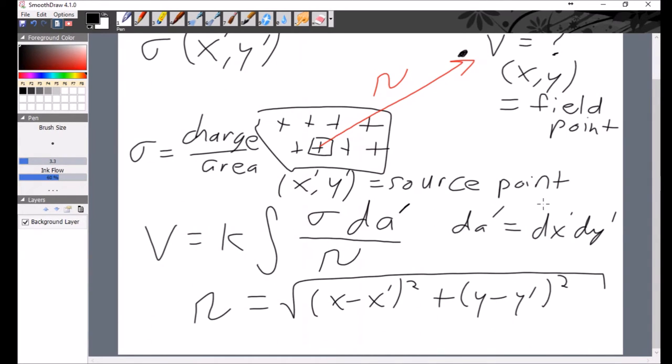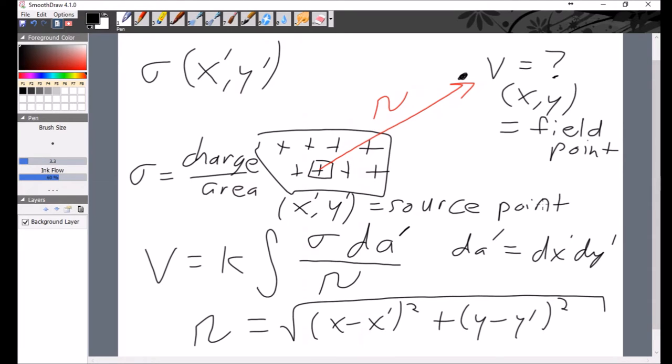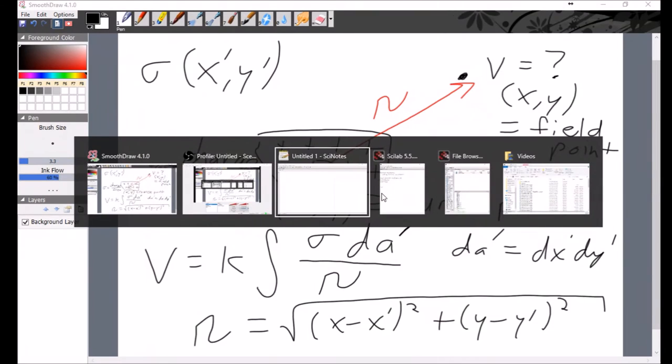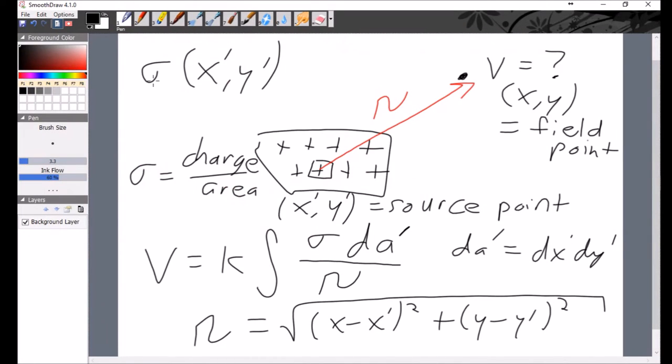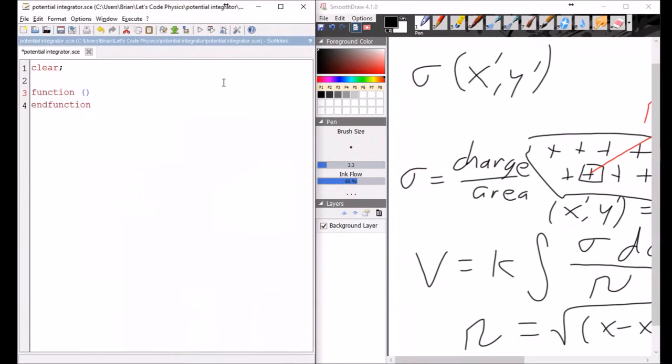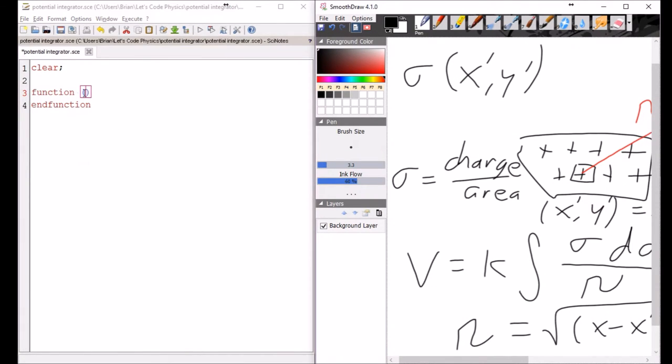And so what we have to do in order to implement an integral in a computational code is to take little pieces. We're going to establish a step size in each direction, a little bit of dx and a little bit of dy. We're basically going to increment over the entire shape. So we're going to do this in Scilab. I haven't worked in Scilab in a little while, so it'll be good to get back. Let's run a clear command first.